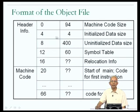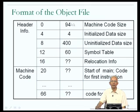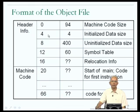In the header, at offset 0, there is some information about the size of the machine code. Apparently the size of the machine code in this particular case is 94 bytes. After that, there is some information about the size of the initialized data, available in the a.out file at an offset of 4. So there are various pieces of information in the header.